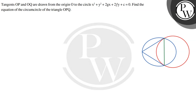Hello, let's see the question. The question says: tangents OP and OQ are drawn from the origin O to the circle x² + y² + 2gx + 2fy + c = 0. Find the equation of the circumcircle of the triangle OPQ.